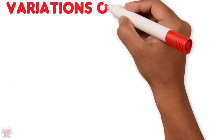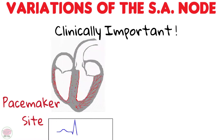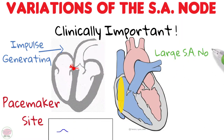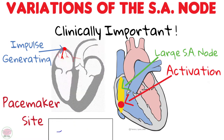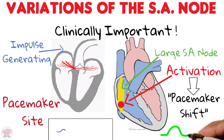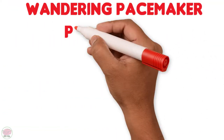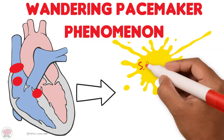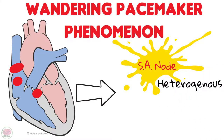These variations in shape and extension of the SA node are clinically important because of the location of the pacemaker site — the specific area within the SA node that activates to generate the impulse. If the SA node is very large, the activation area could be located closer to the inferior vena cava than to the superior vena cava. This pacemaker shift can be responsible for variations in the P wave seen on EKG and can also explain the wandering pacemaker phenomenon, which occurs when the pacemaker site changes between the SA node, atrium, and the AV node. This shift is understandable if we think of the SA node as a heterogeneous structure that mixes with surrounding tissue, rather than the homogeneous, encapsulated structure depicted in most anatomy textbooks.